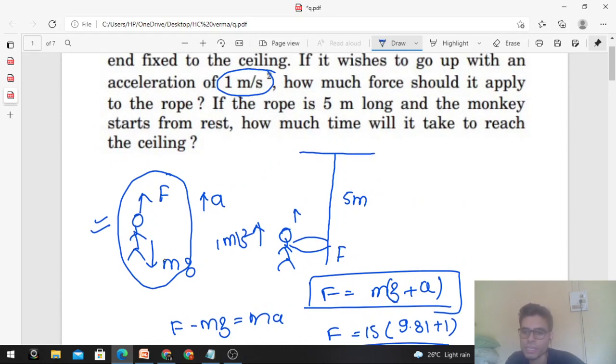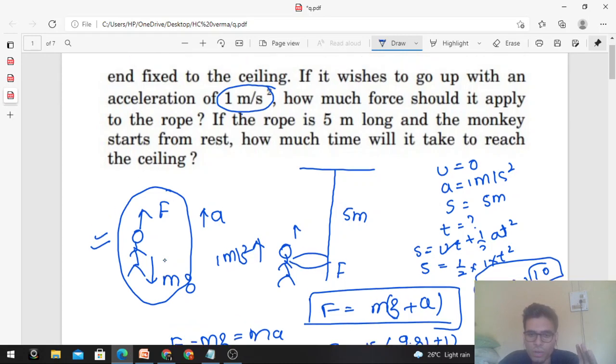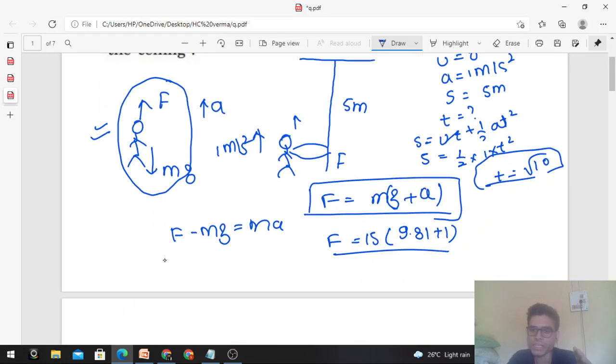This is the value of force. Now for the second part, we use the equation s = ut + (1/2)at². Initial velocity is zero. You can find the time and also change to different cases to study.